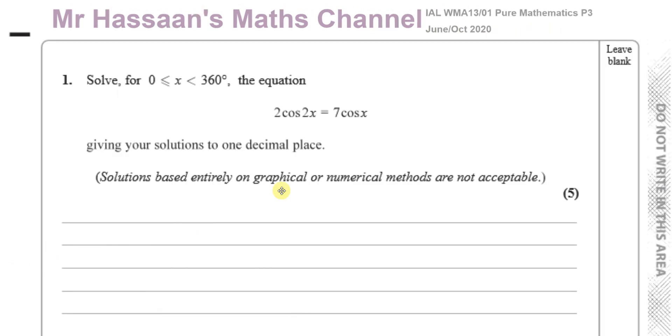Now here we have question number one, a question about trig equations and identities. It's telling us to solve in degrees between 0 and 360 degrees the equation 2 cosine 2x equals 7 cosine x.